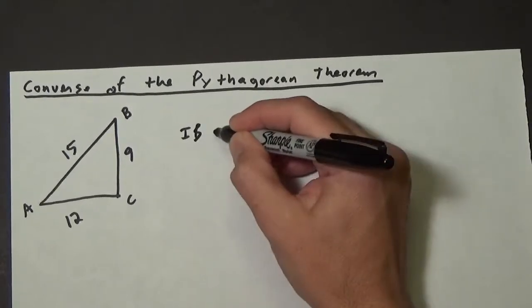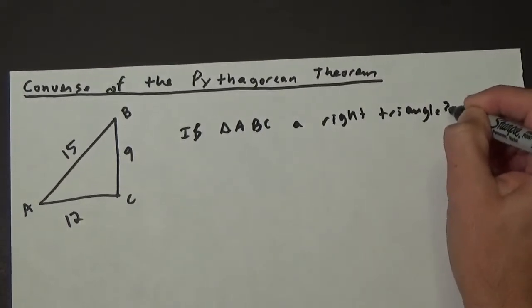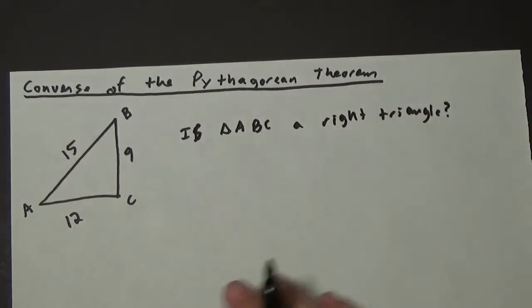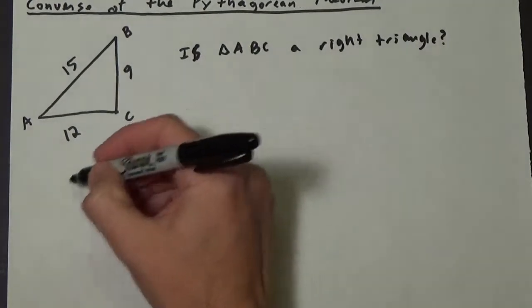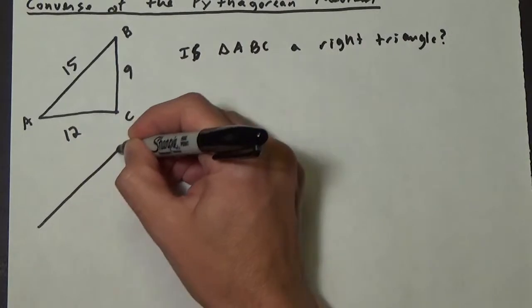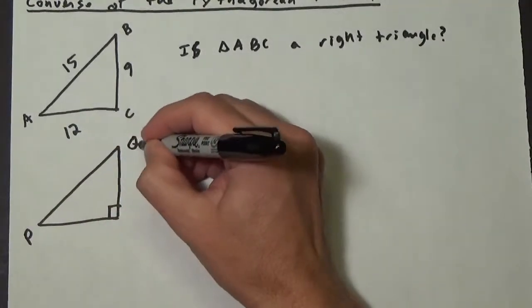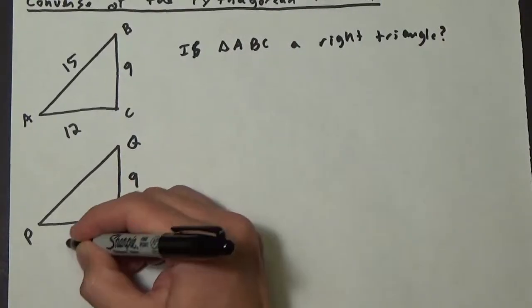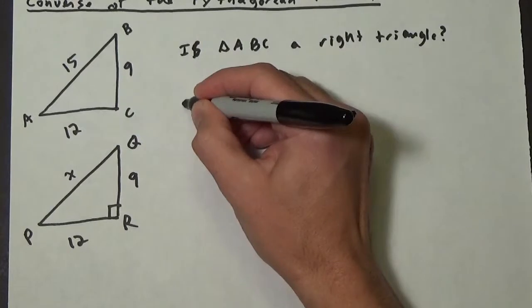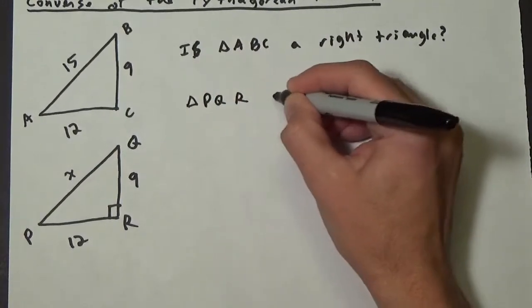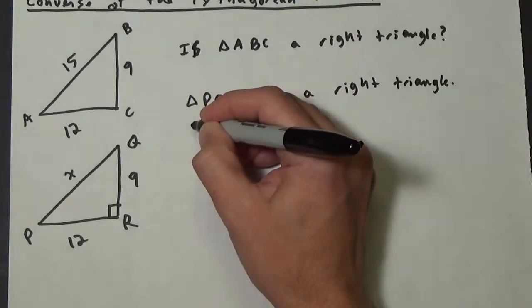The question is: is triangle ABC a right triangle? To answer this, let's do a little proof. We're going to build another triangle here, and this one we're going to say is a right triangle. We'll call it triangle PQR, with sides 9 and 12, and the hypotenuse x. So we start: triangle PQR is a right triangle, and we're going to find the value of x.